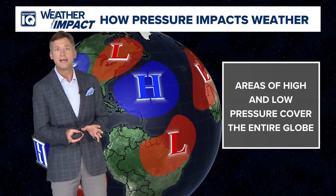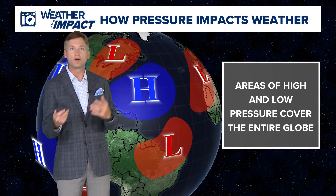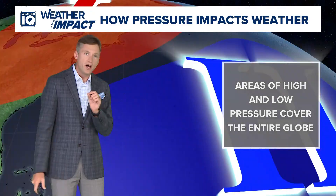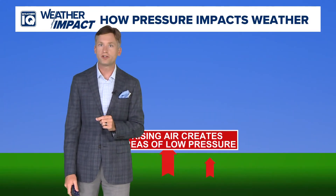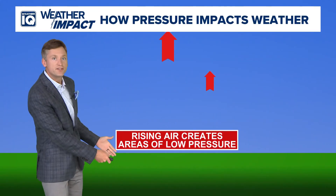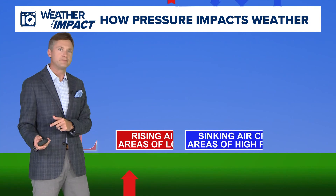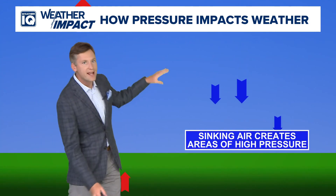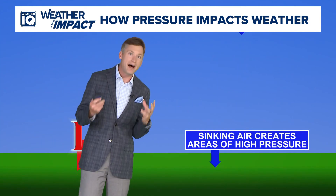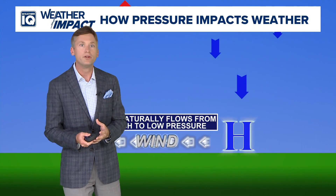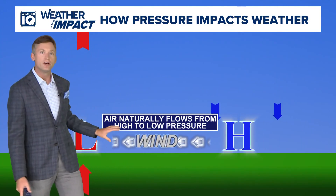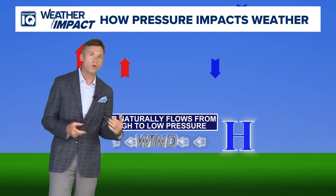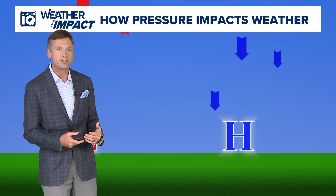Our weather is driven by several areas of high and low pressure all across the globe, based on how the Earth is heated and cooled and the conditions here on the ground. A few simple rules: low pressure is created as air at the surface rises; the opposite is true for high pressure — sinking air creates areas of high pressure. Combined together, our air will naturally flow from high pressure to low pressure, which is how our wind is created.